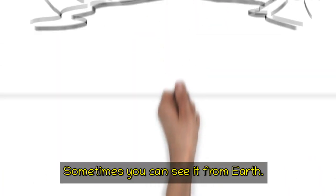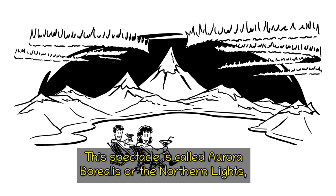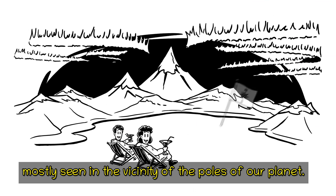Sometimes you can see it from Earth. This spectacle is called Aurora Borealis, or the Northern Lights, mostly seen in the vicinity of the poles of our planet.